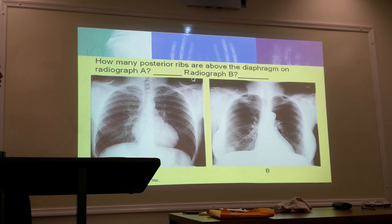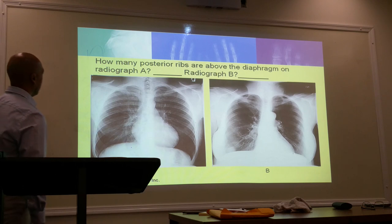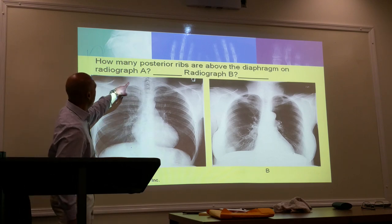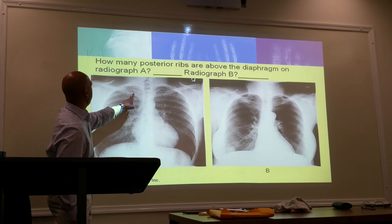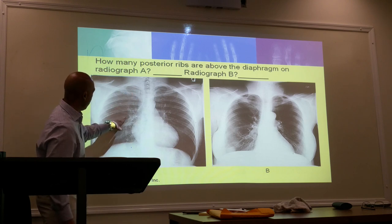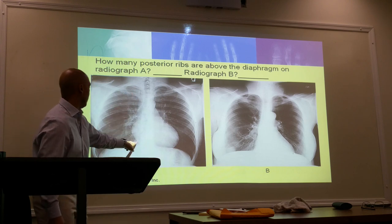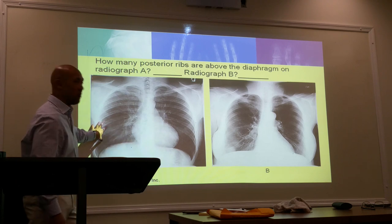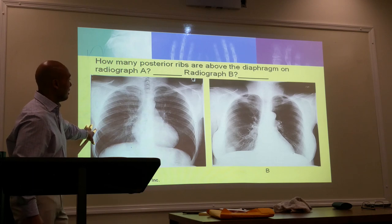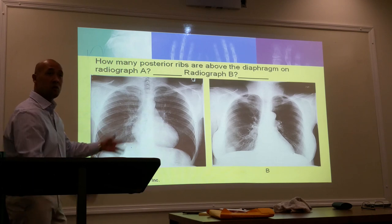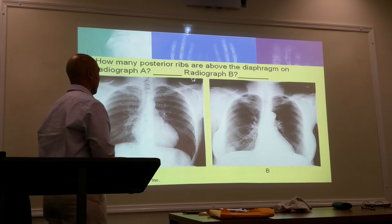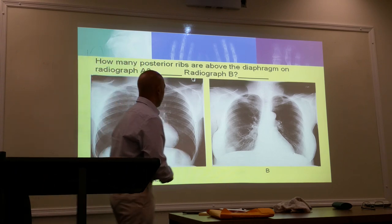How many posterior ribs do we see? One, two, three, four, five, six, seven, eight, nine, ten — and there's 11 right there. Is this a good radiograph? Yes, because we've got good inspiration. You need to see at least 10 ribs. This is the hilar region — they may have pneumonia. It's highly vascular, so this can be pneumonitis or pneumonia.